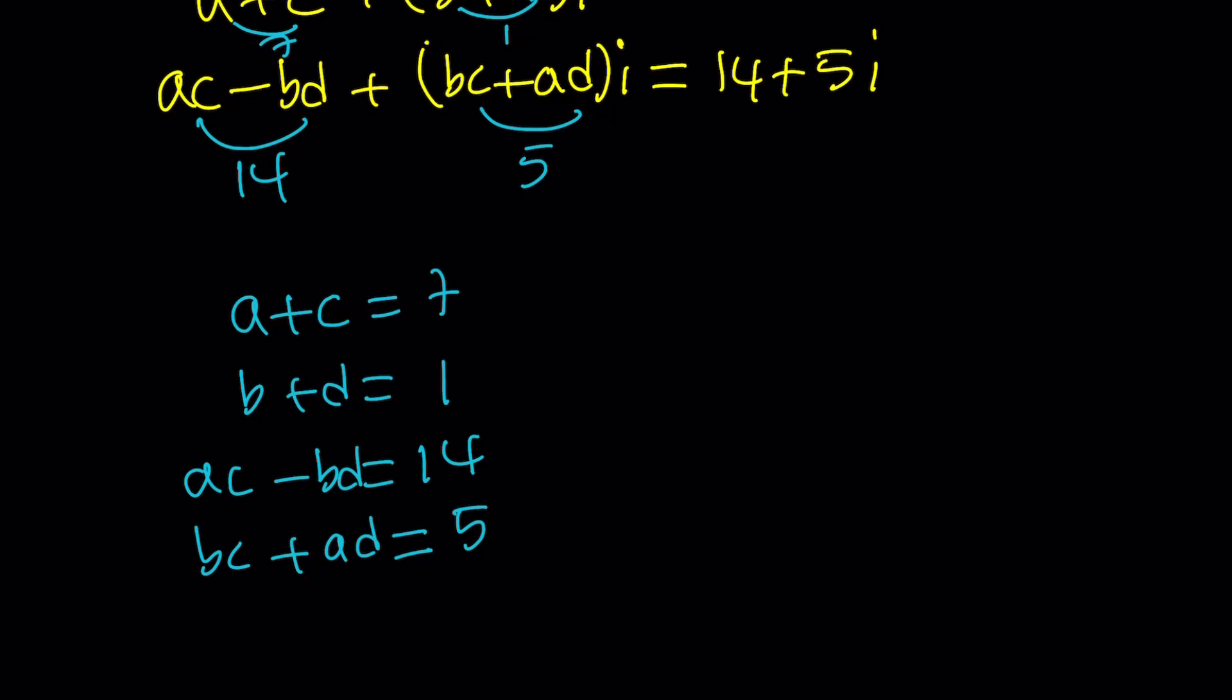So this is our system. Four variables, four equations. So that's fair. Let's go ahead and isolate C from the first equation and D from the second equation because I'm going to use substitution. So let's go ahead and replace the C and D with these in the third and the fourth equation.